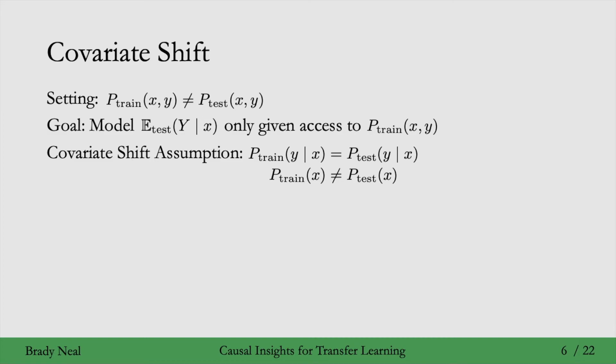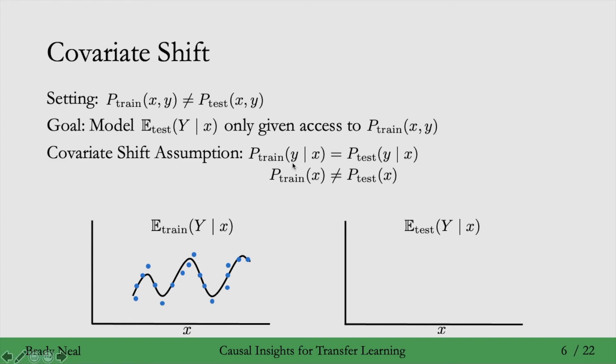Okay, so how do we use the covariate shift assumption? Well, we have some data, so here I have x on the x-axis and y on the y-axis. These points are x-y pairs. This is data from the training distribution, and then we just fit a curve through there for the conditional expectation of Y given x in the training distribution. And remember, our goal is to model that conditional expectation in the test distribution. So, the covariate shift assumption up here, that these two conditional distributions are the same, tells us that for this conditional expectation, we're just going to copy over this conditional expectation from the training distribution.